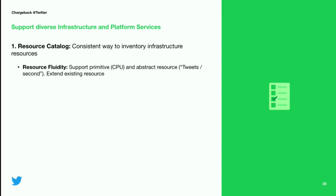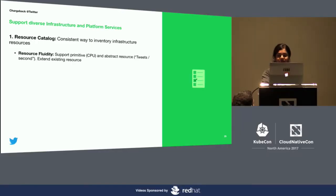We had to support resource fluidity. With the utility computing model, resources are no longer a permanent entity from either infrastructure or service owners' perspectives. It is much easier to model capacity and understand costs when everything was running on bare metal machines. In the current service-oriented architecture, we need to treat resources in a more granular way — break them down to primitives like CPU, RAM, memory, reads or writes per second, etc. — and create abstract resources as we go higher up the stack, for example, tweets per second. Infrastructure resources evolve over time and our model captures this.